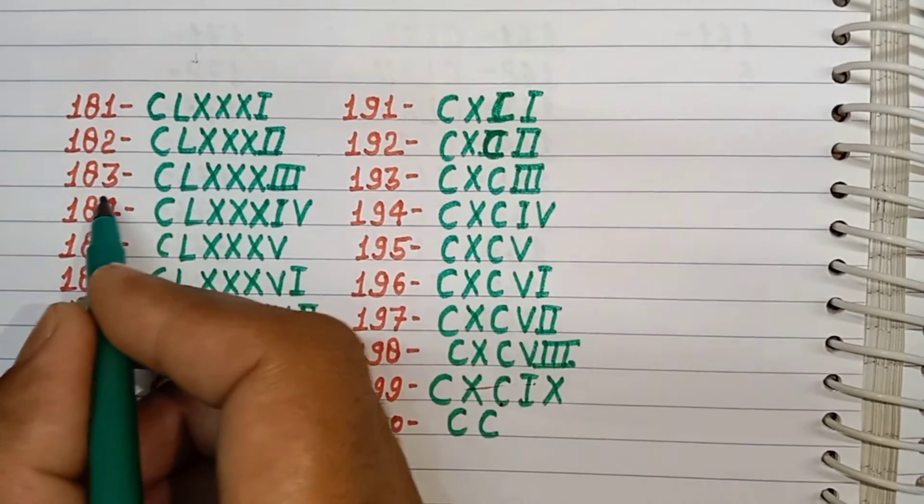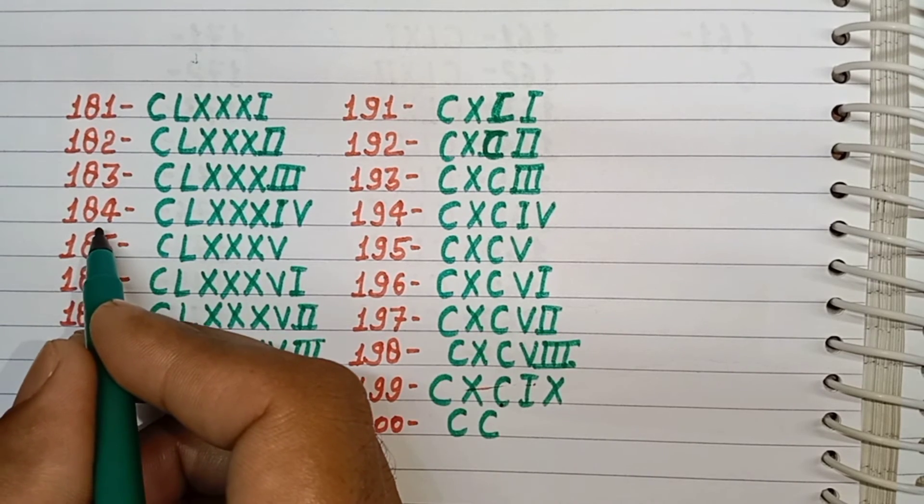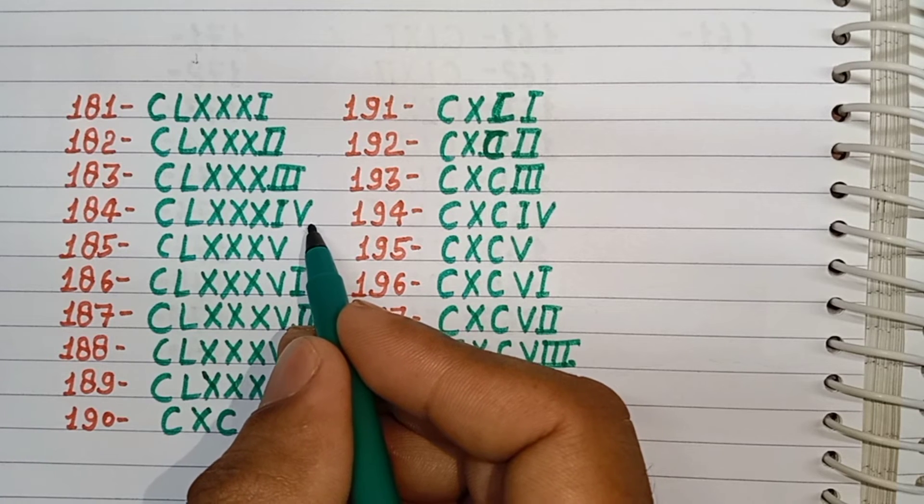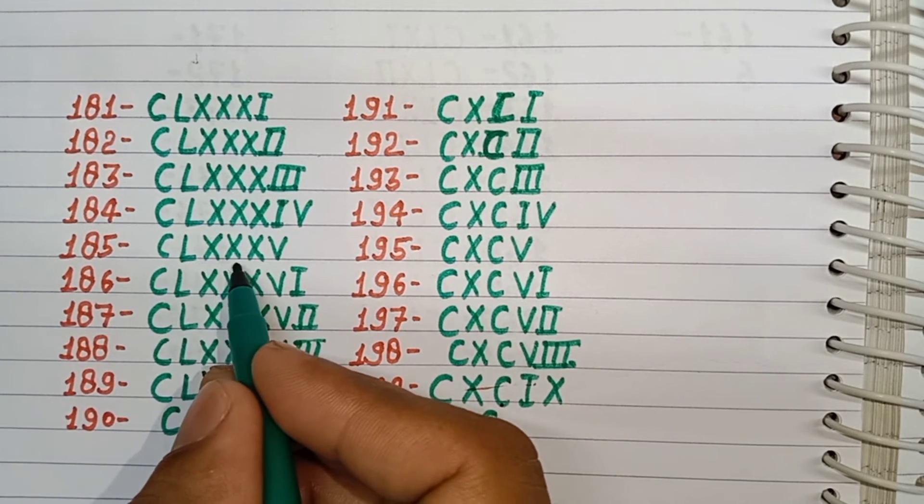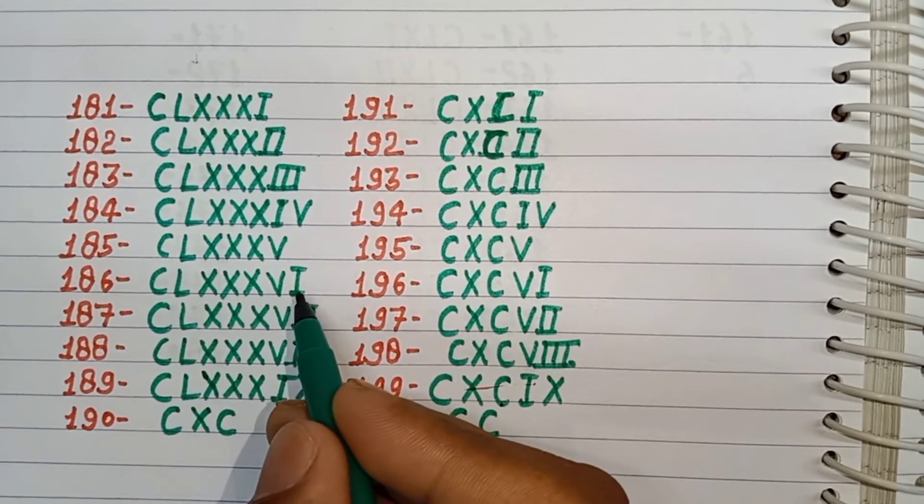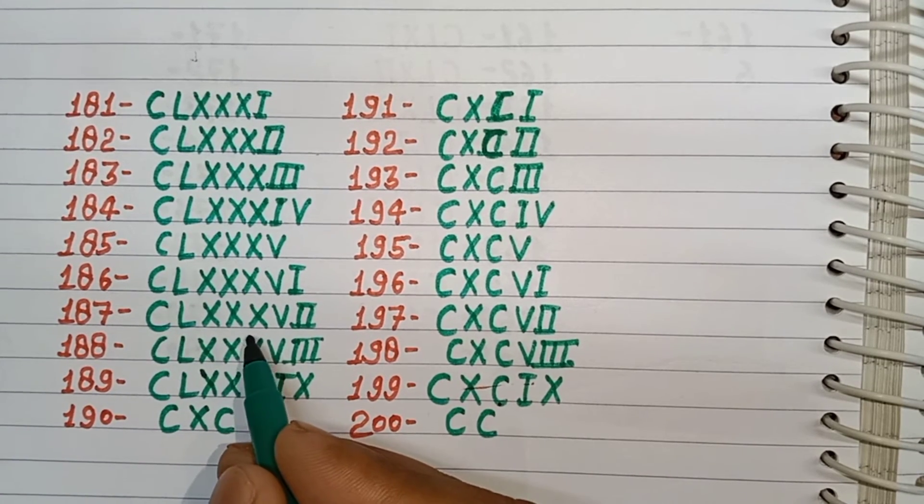181 CLXXXI, 182 CLXXXII, 183 CLXXXIII, 184 CLXXXIV, 185 CLXXXV, 186 CLXXXVI, 187 CLXXXVII